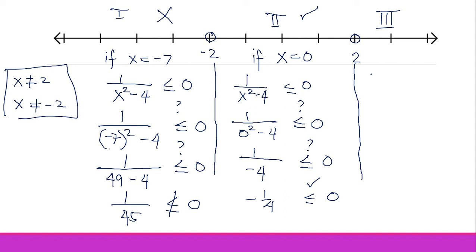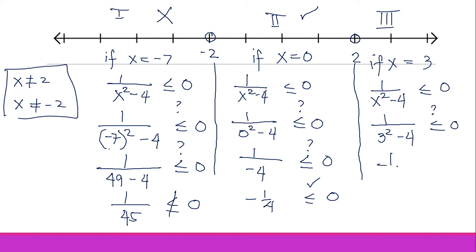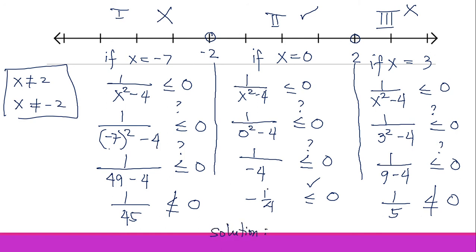Even though we found one solution region, do not stop — you must test every region, because sometimes more than one region can be part of the solution. For Region 3, let's pick x = 3. One over 3² minus 4 gives 1 over 9 minus 4, which is 1/5. That is not less than or equal to zero, so Region 3 is out.